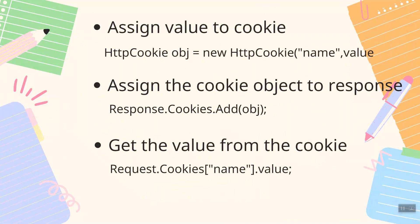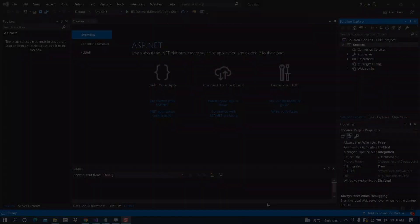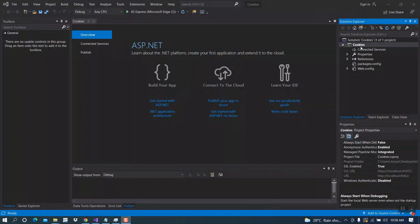When we implement a cookie, first we have to assign values to the cookie, then assign the cookie object to the response, and the third step is to get the value for the cookie. Now let's see the coding part.